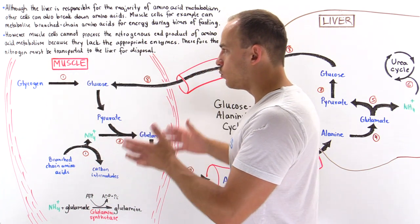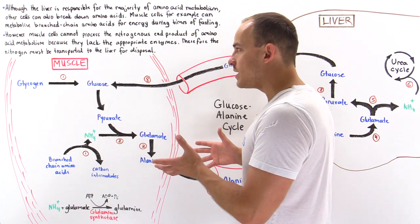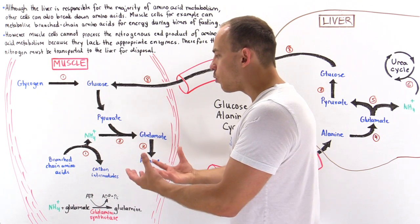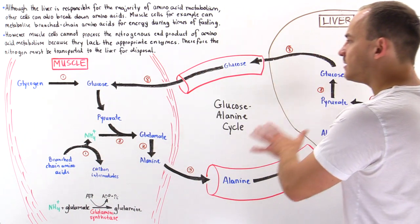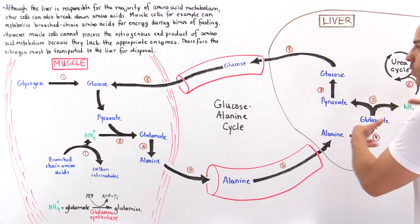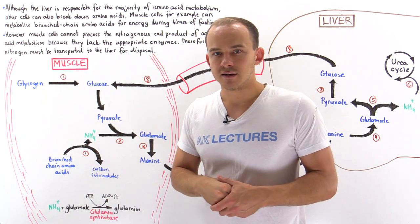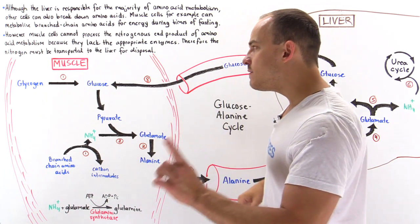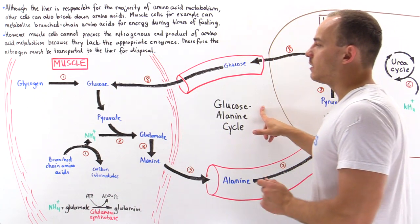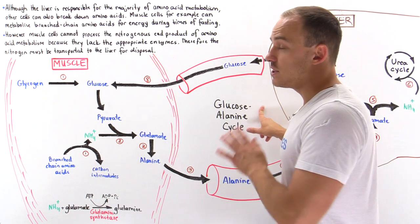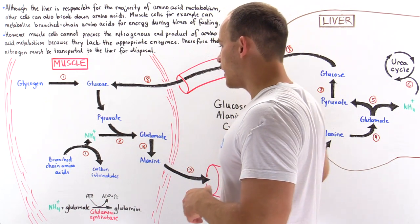Ultimately, what the skeletal muscle cell must do is transport that ammonium back to the liver, where it can be fed into the urea cycle. One of these pathways is known as the glucose-alanine cycle, and this will be the focus of this lecture.